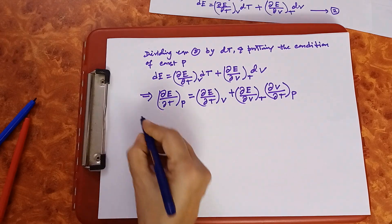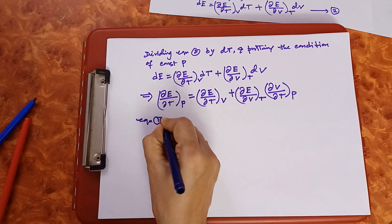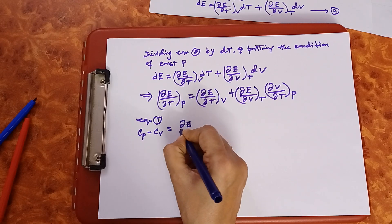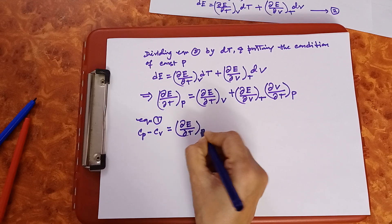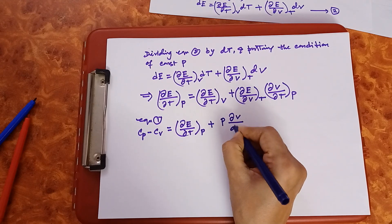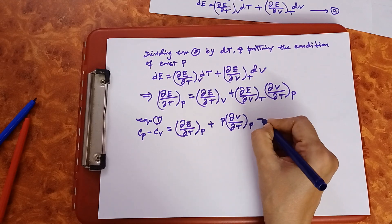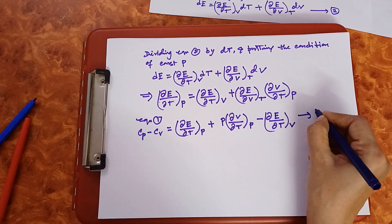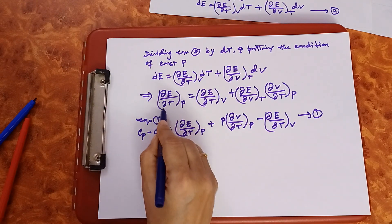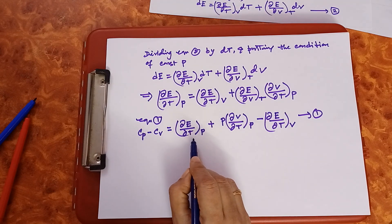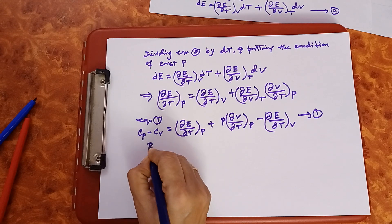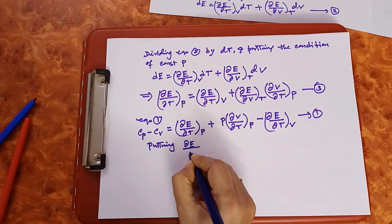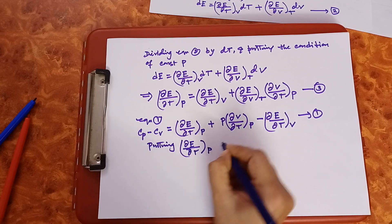Substituting this expression for (∂E/∂T)_P into equation 1. Equation 1 was: Cp minus Cv = (∂E/∂T)_P + P·(∂V/∂T)_P − (∂E/∂T)_V. We now substitute, and this gives equation 3.